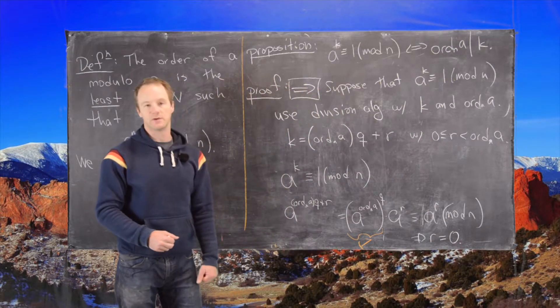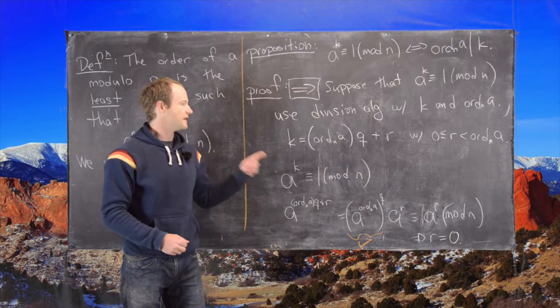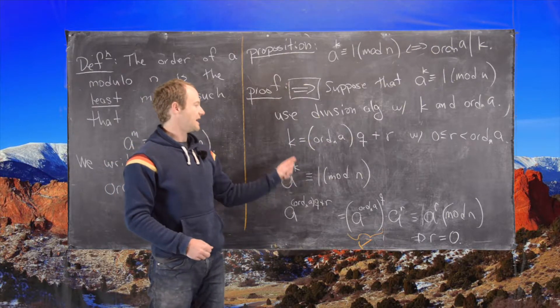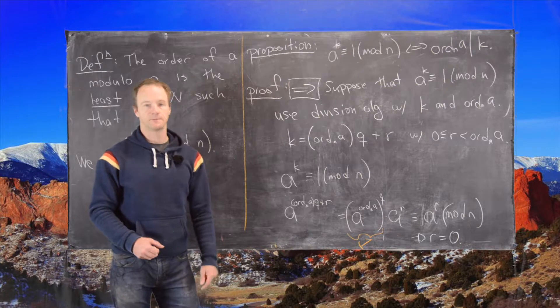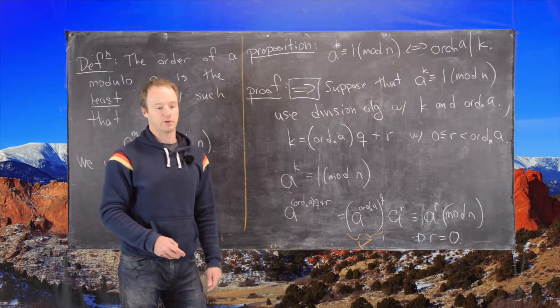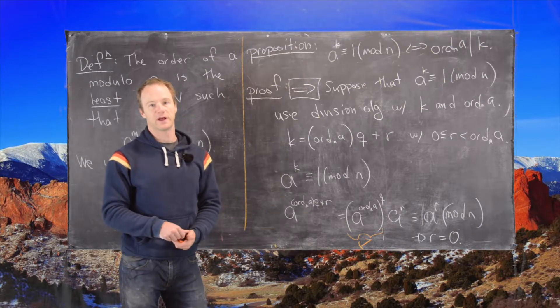But if you've done the division algorithm and you've gotten the remainder of 0, then that tells you that the order of a, in fact, does divide k. So that finishes this direction of the proof.